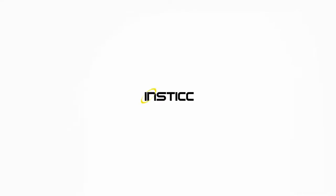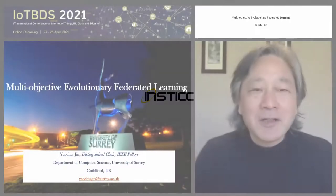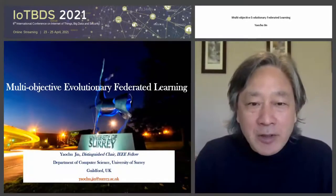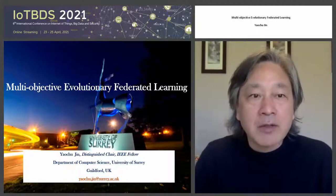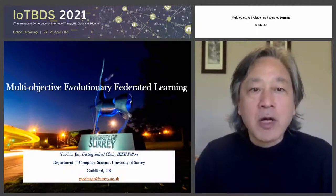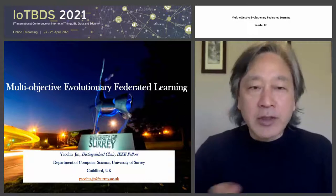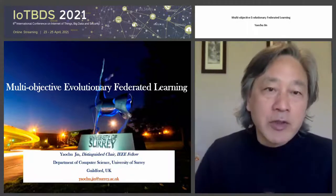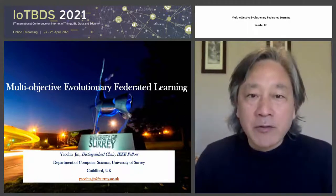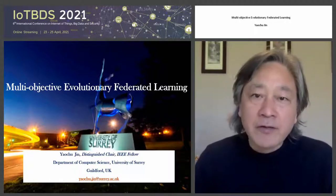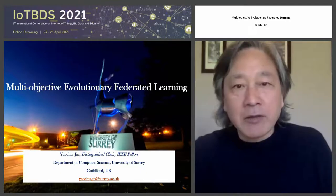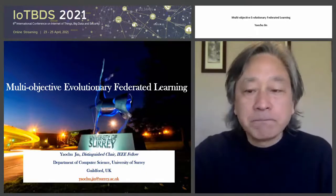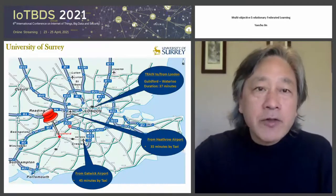Good morning, good afternoon, or good evening depending on where you are. My name is from the computer science department, University of Surrey. My topic today will be multi-objective evolutionary federated learning, which involves three main concepts: evolutionary learning, federated learning, and multi-objective optimization. I will explain what each of these things means.